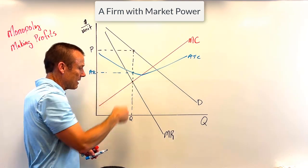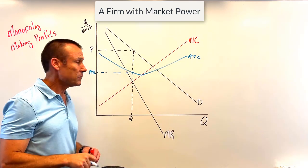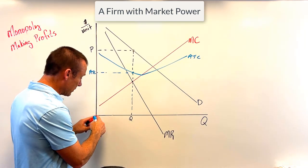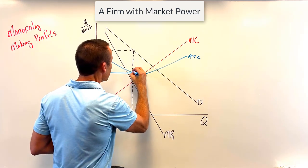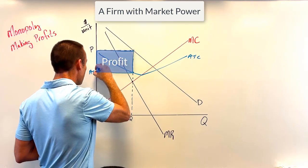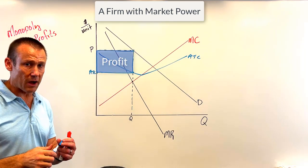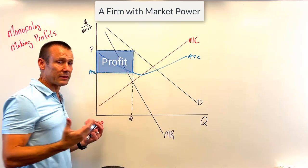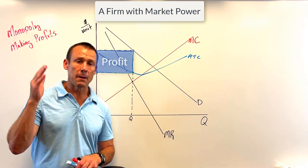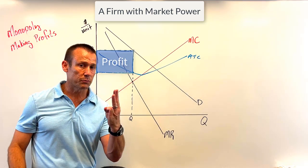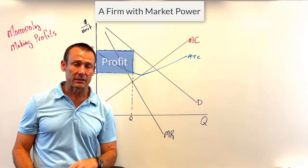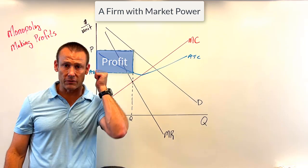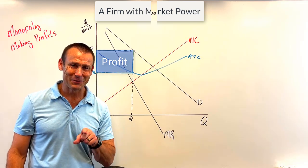See that dot and that dot — that's the price and that's the ATC. The difference between P and ATC is the per unit profit. If you want to find the total profit you need all the units produced, so the total profit is going to be that box right there — that rectangle. For every good produced, we're making that per unit profit. That's a monopoly making profit. Always remember the big three — MC, MR, and demand — and then the fourth curve, ATC, to locate profit or loss.